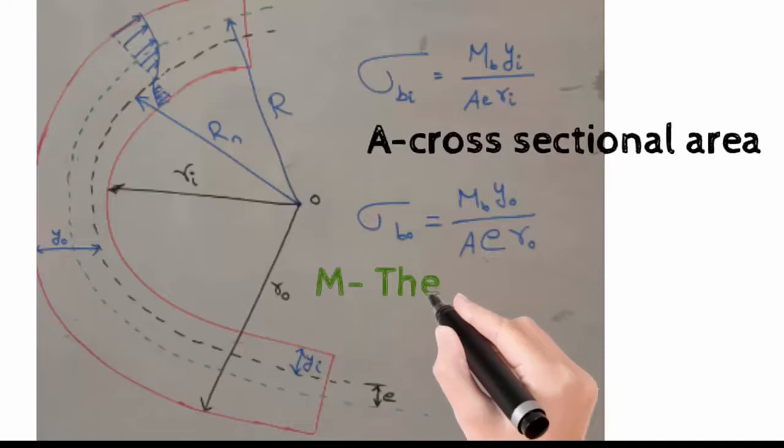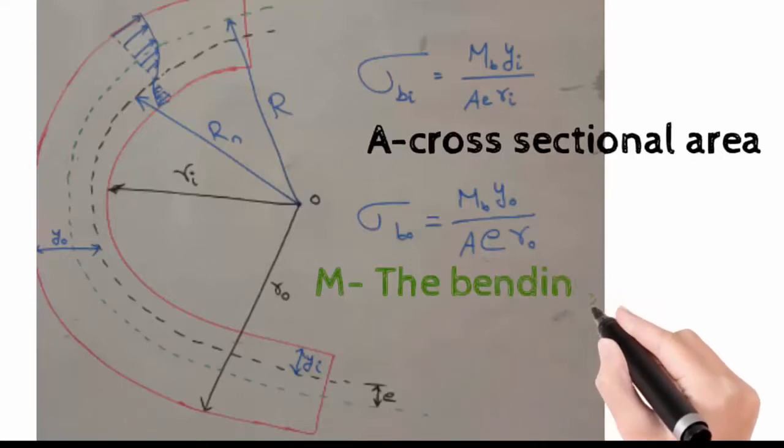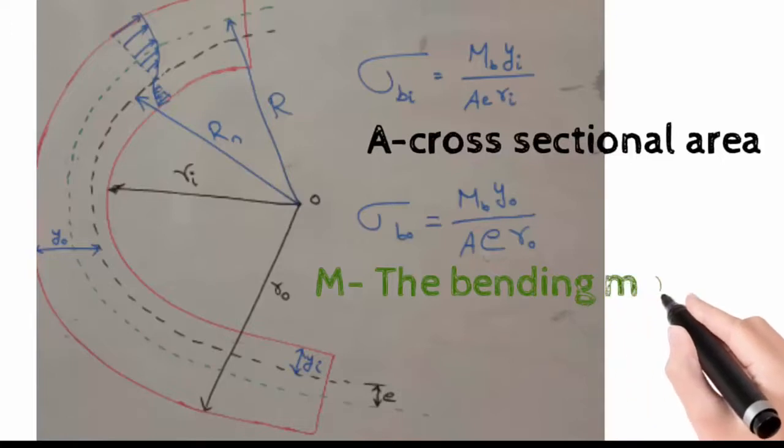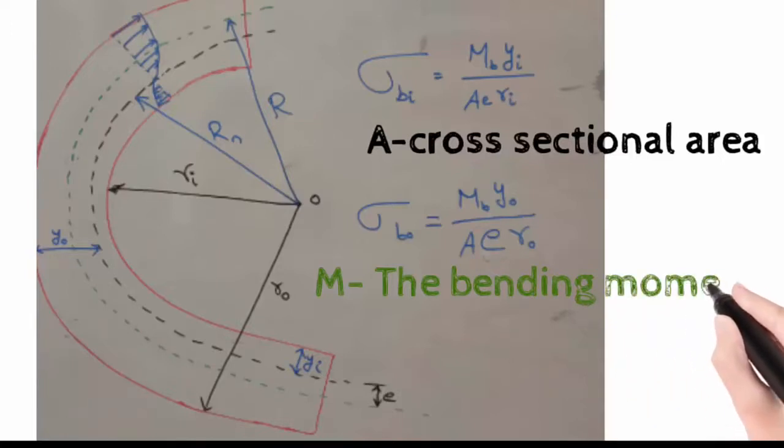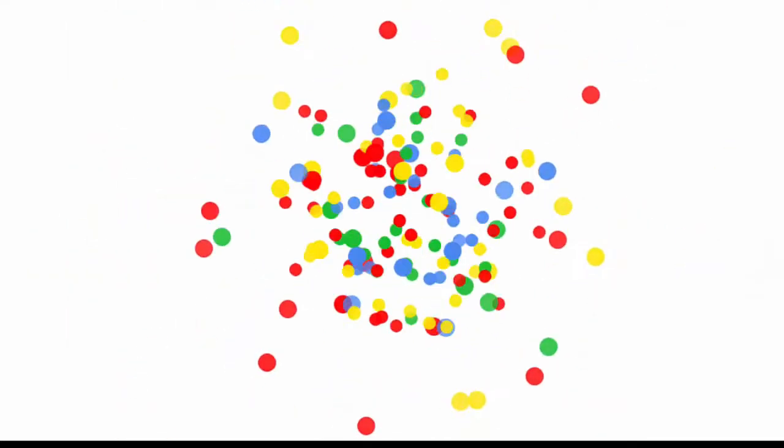R and Rn can be found with the help of data book formulas. Using those, we can find the other values and calculate Sigma Bi and Sigma B0. The nature of the stress has to be finalized with the help of the diagram. Using this approach, we can find the stresses acting in the curved beam.